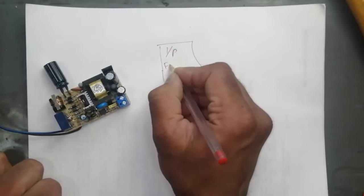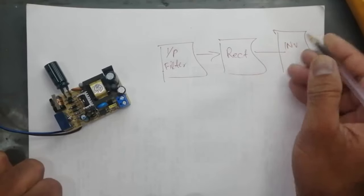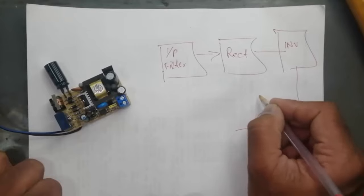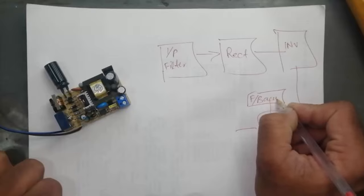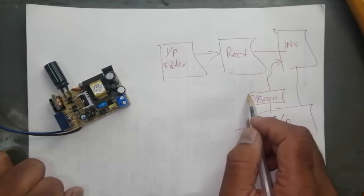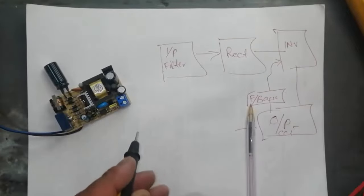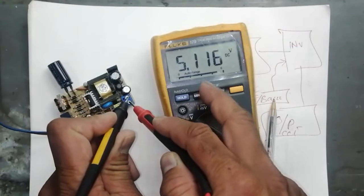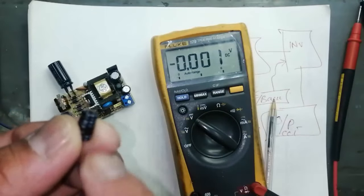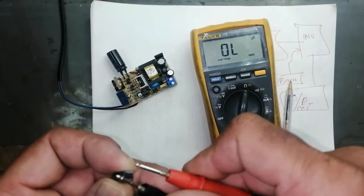If this video is good for you, you can subscribe, like, and share. Because power supply — we have three sections: input filter, rectifier circuit, inverter circuit, output circuit. Between output there is feedback — this goes to inverter section. If there is any problem in this area, or the feedback circuit is also faulty, this section will not work. This converter, this plug converter, is working properly — 5.1V. We solved the problem. We found this capacitor — the value was down, capacitance decreased.